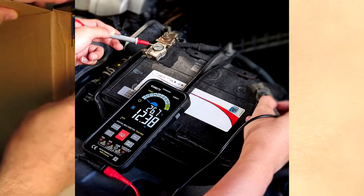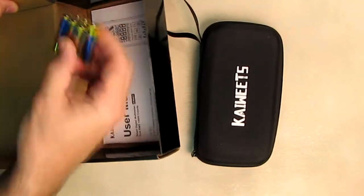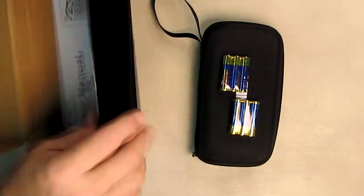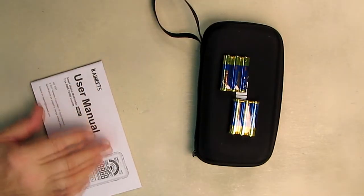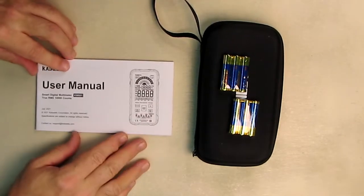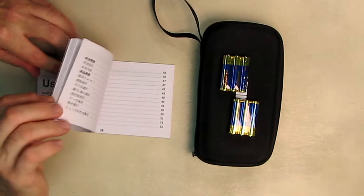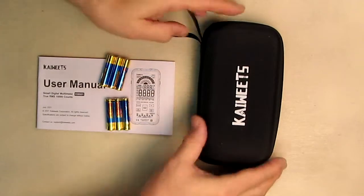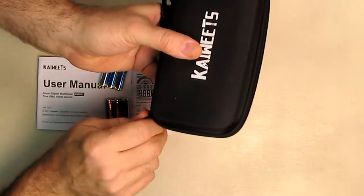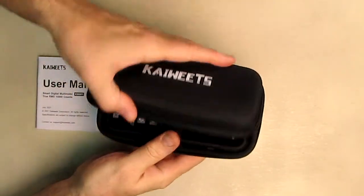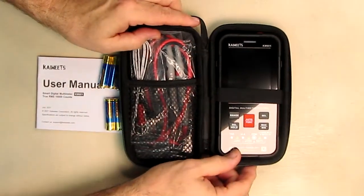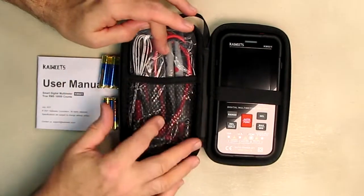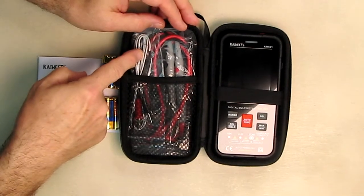So we have included six AA batteries and a little instruction manual that looks pretty thick and comprehensive. We're going to learn all about this. And then this nice little holder with a zipper compartment on there, which is really great. And there's the meter itself.